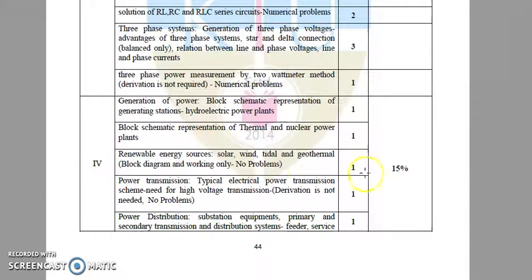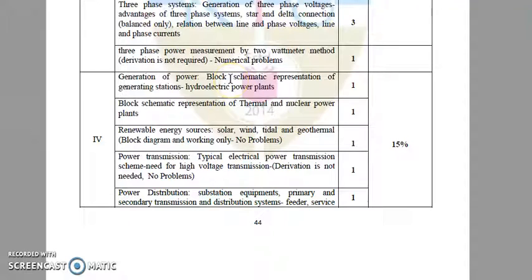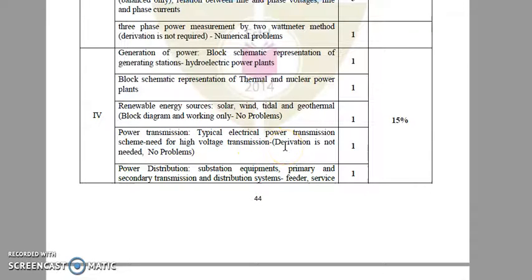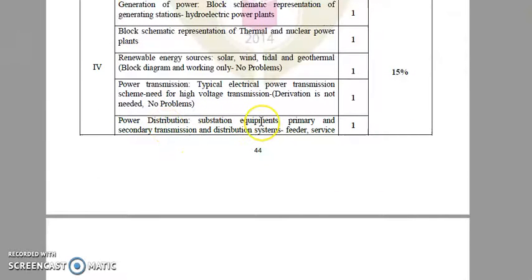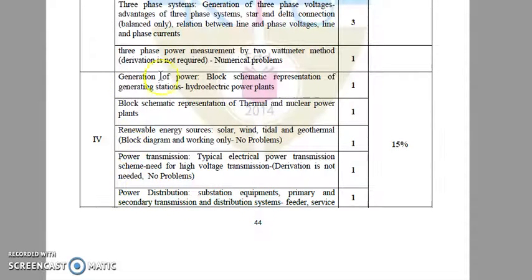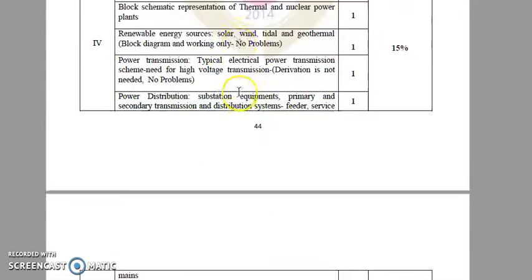The fourth module is a very simple one. It consists of the basics of generating stations — hydroelectric power plants, thermal, nuclear, etc. A section is also allotted for renewable energy sources: solar, wind, tidal, and geothermal — only block diagrams and working concepts, and no problems will be asked from the renewable energy section. Next is power transmission — typical power electric transmission scheme, the need for high voltage transmission, advantages of high voltage transmission, power distribution, substation equipment, primary and secondary transmission, distribution, feeder, service, etc. The weightage for the fourth module is 15%, that is 15 marks out of 100.